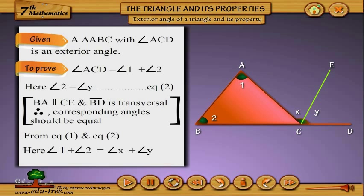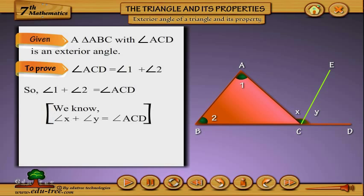From equation 1 and equation 2, angle 1 plus angle 2 equals angle x plus angle y. So angle 1 plus angle 2 equals angle ACD. We know angle x plus angle y equals angle ACD. Hence proved. Thank you.